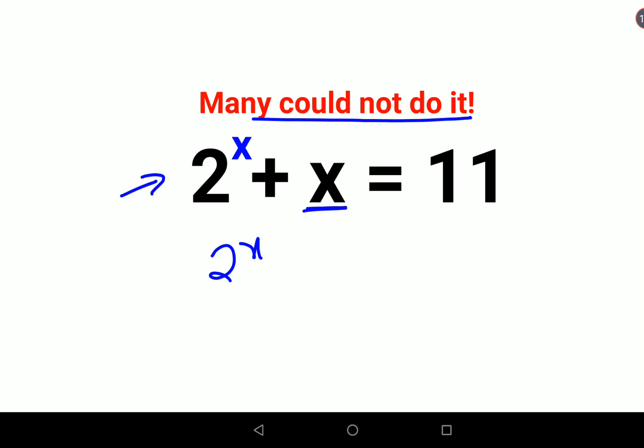They would do 11 minus x and then take log on both sides. Yes, you can do all of that—I'm not saying you're wrong. But in these kinds of scenarios where something like this is given, one very important thing was: x is a natural number.